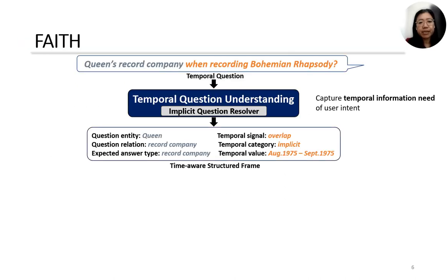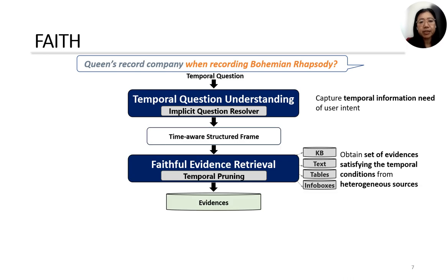FACE works in three stages. The first stage is temporal QA understanding. The goal of this stage is to capture the temporal information need in a frame-like structure. We propose an implicit QA resolver to transform implicit temporal constraints into explicit temporal values by recursively calling the QA system itself.